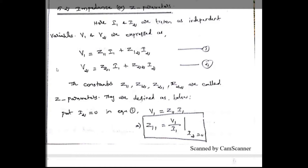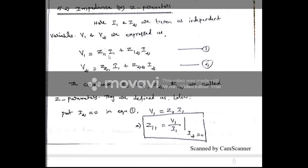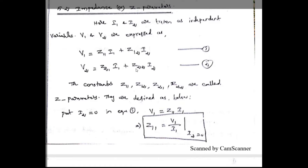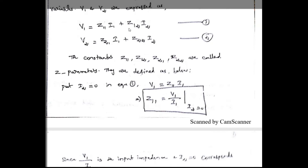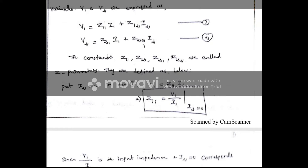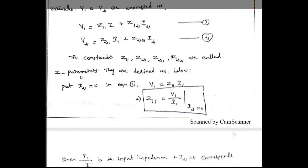In these equations, Z11, Z12, Z21, and Z22 are the Z parameter constants. To find Z11 and Z21, we make I2 = 0 by open-circuiting the output port. Substituting I2 = 0 in equation 1 gives V1 = Z11·I1, so Z11 = V1/I1 — the open-circuit input impedance or driving-point input impedance. From equation 2, Z21 = V2/I1 — the forward transfer impedance.